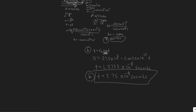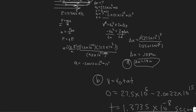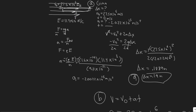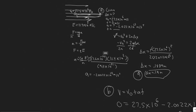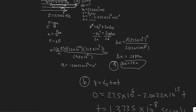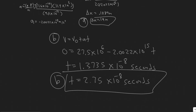So those are your final answers: Part A is 0.19 meters — the distance the electron travels before stopping. Part B is 2.75 times 10 to the minus 8 seconds — the total time for the electron to travel forward and return to its starting point. Hopefully you found this video useful.